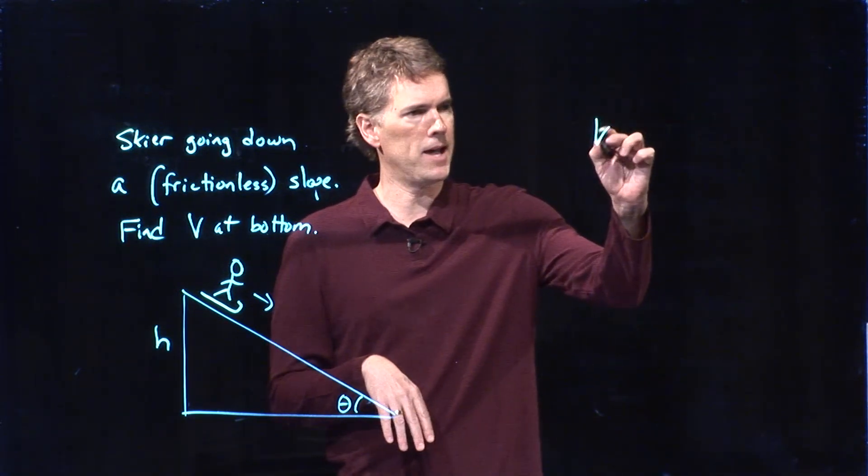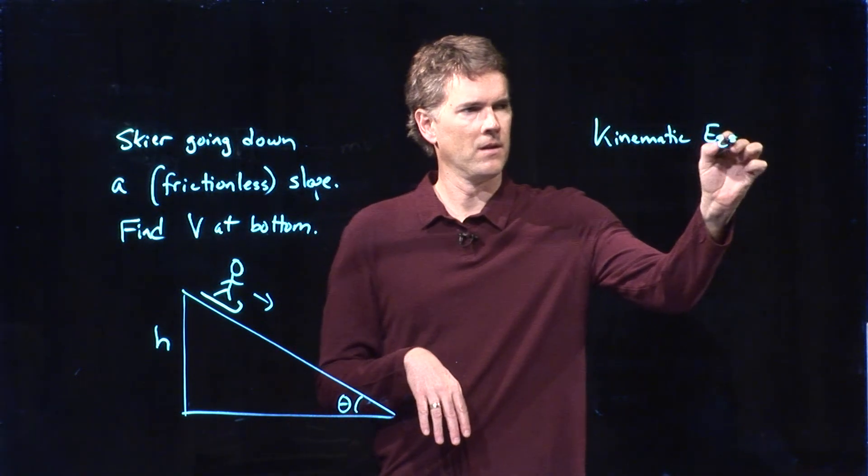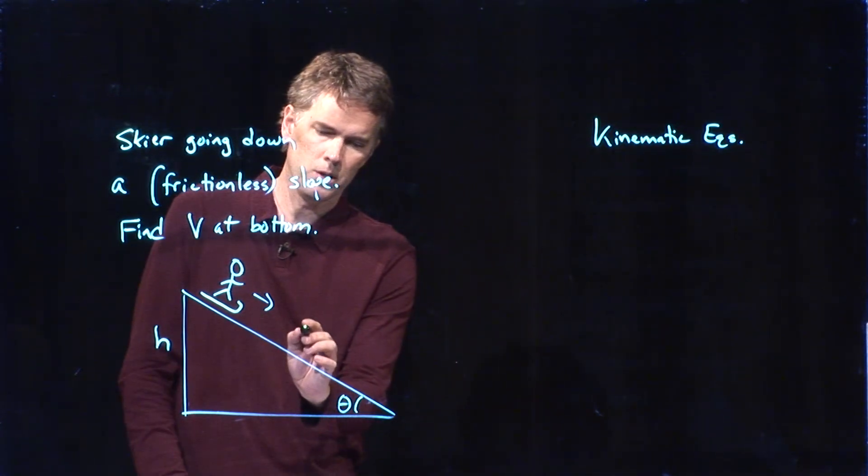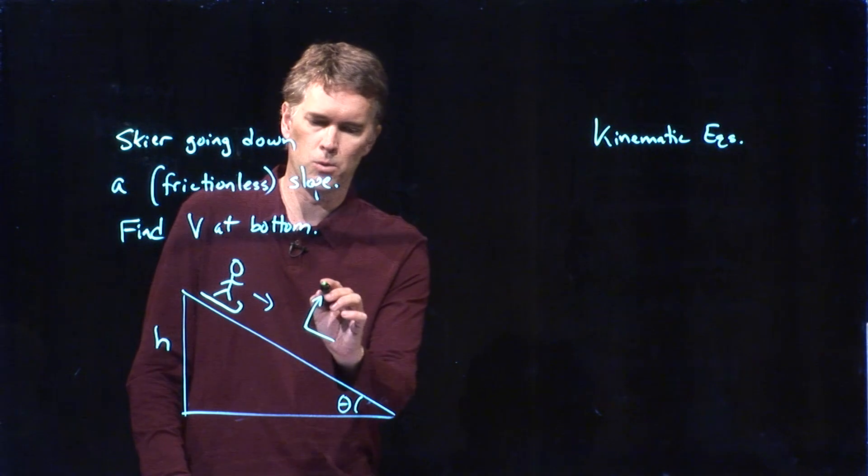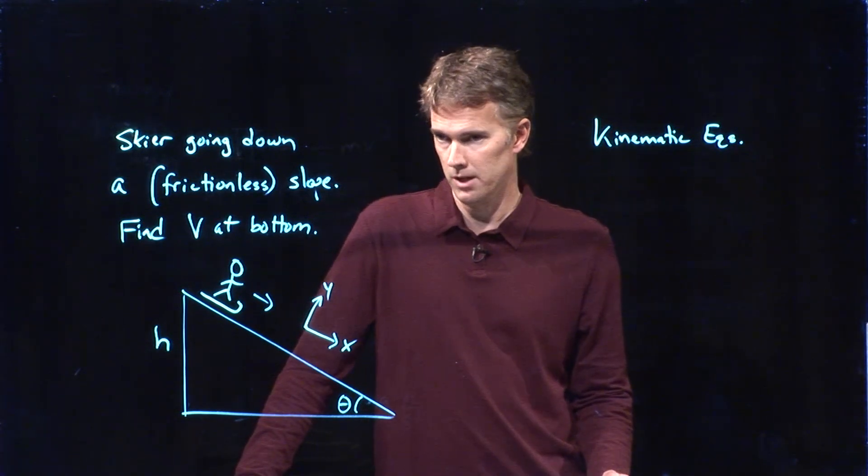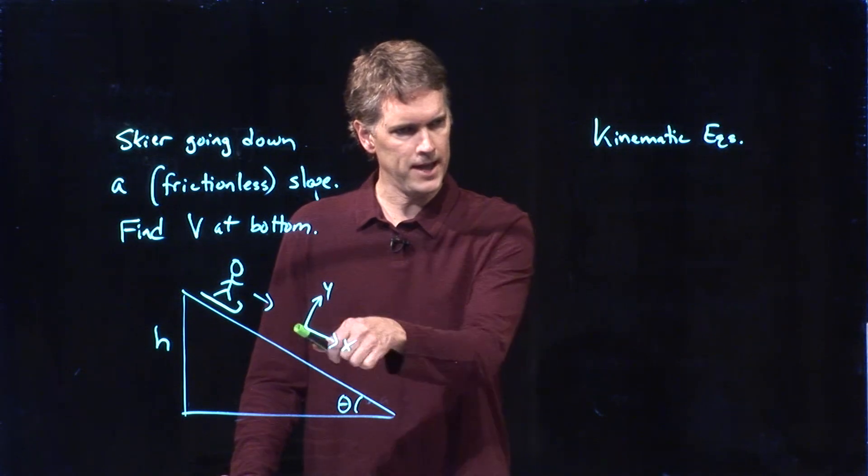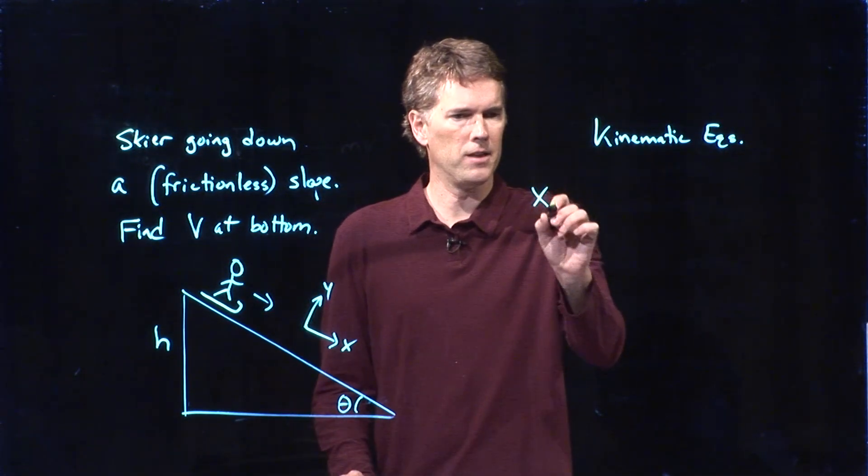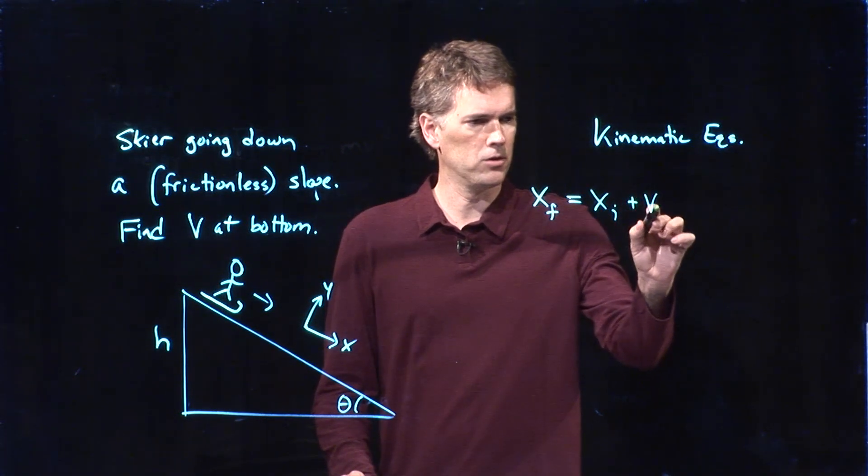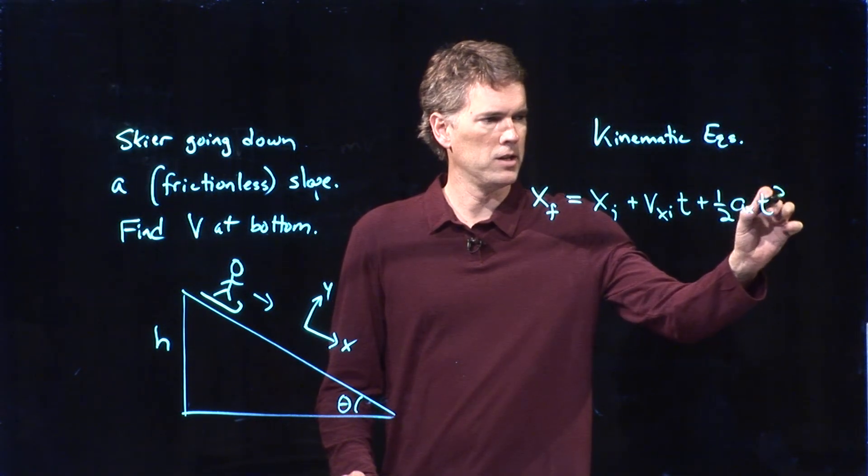So if I think about the kinematic equations, what can I say? Well, any time we're dealing with a slope like this, we usually want to go to a rotated coordinate system. And if I go to a rotated coordinate system like this, I'm not really worried about the y direction. I'm only worried about the x direction. And so I can simplify this to one simple equation: x final equals x initial plus vx initial times t plus 1 half a sub x t squared.